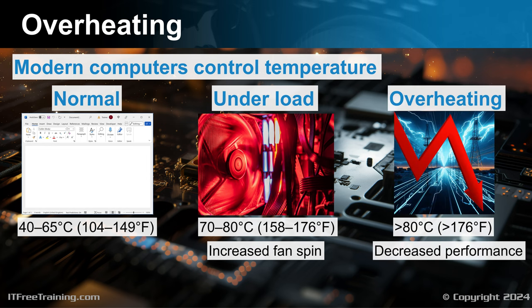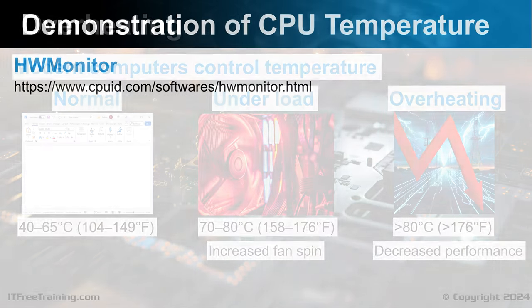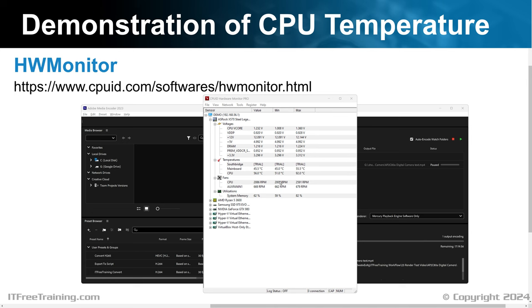If the temperature gets too high, this signals to the computer that something else needs to be done to get the temperature down. This will generally mean reducing the clock rate — reducing speed reduces the amount of heat each component will generate. As a consequence, the performance will be reduced. If the computer does not do this, the component may overheat, which can cause damage, or the computer may unexpectedly reboot. Thus, unexpected reboots can be a sign there is a cooling problem. To understand the process better, I will use a hardware monitor to see what is happening with the CPU and fan speed.